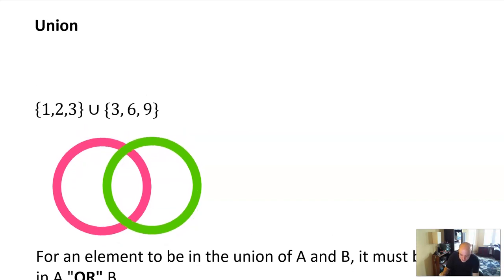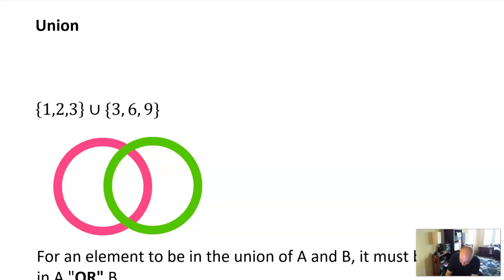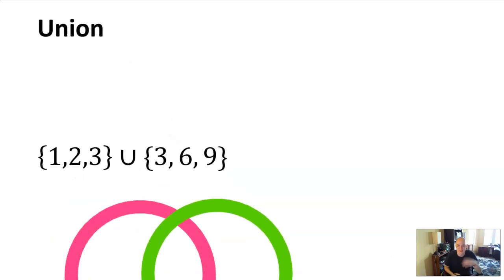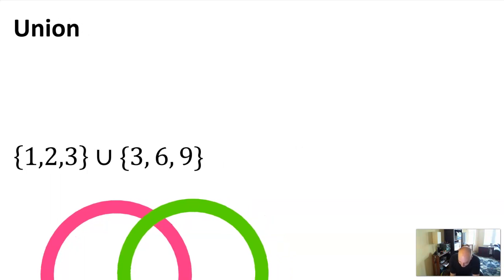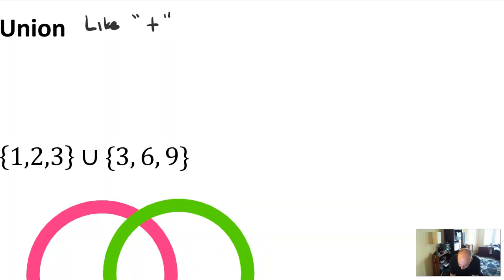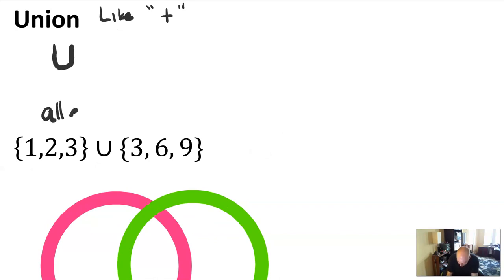There are some ideas related to sets. The first idea is the idea of union. A union is basically the plus sign for sets — it's the way that we join two sets. Union is actually like an operation, kind of like a plus but for sets. You always have a union in between two sets. You use the capital U for union. The union of two sets is a new set.